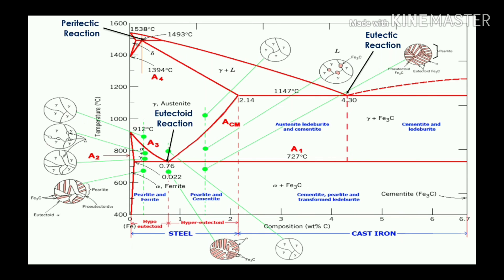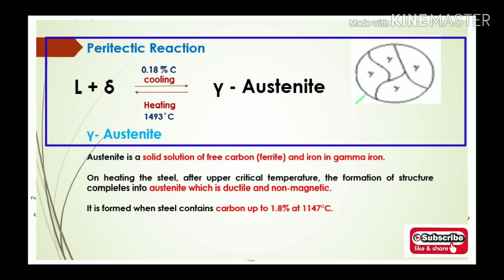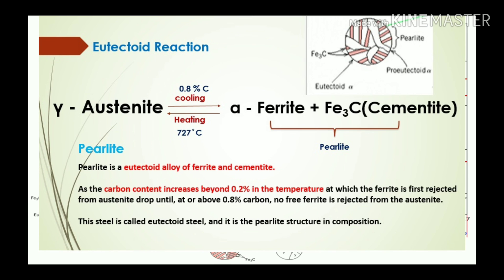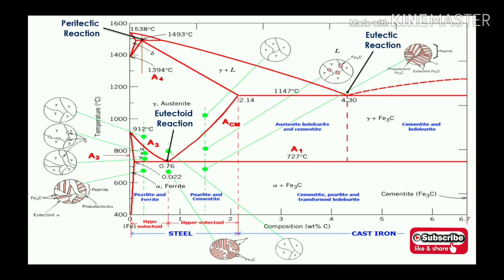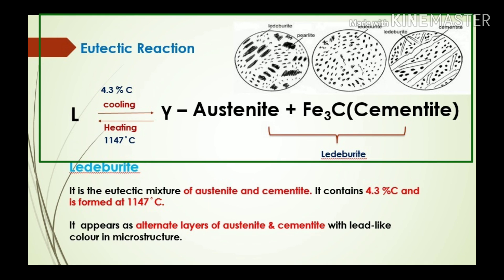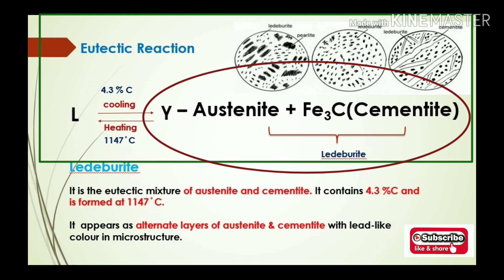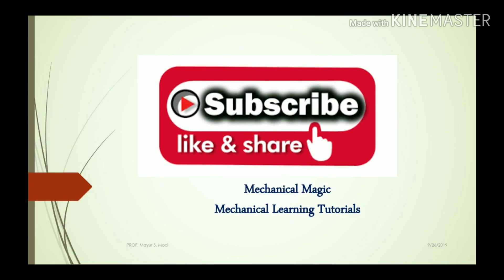Summary of the three reactions in the iron-carbon diagram: First, the peritectic reaction at 0.18% carbon and 1493°C — liquid plus solid (delta iron) converts into gamma austenite. Second, the eutectoid reaction at 0.8% carbon and 727°C — gamma austenite converts into pearlite (alpha ferrite plus cementite). Third, the eutectic reaction at 1147°C and 4.3% carbon — liquid converts into two solids: gamma austenite plus cementite (Fe3C), forming ledeburite. Thank you — please subscribe, like, and share Mechanical Magic Mechanical Learning Tutorials.